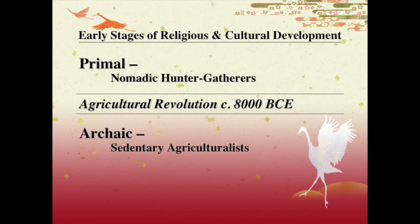Sometimes when we're talking about a large span of time we will pick a target date to reference. A target date is something somewhere in the middle of a long period of time — if you're throwing darts at a target you're trying to hit the bullseye in the middle. So for the agricultural revolution a nice round target date in the middle of the span of time is about 8,000 BCE. We'll use that as our target date — circa 8,000 BCE.